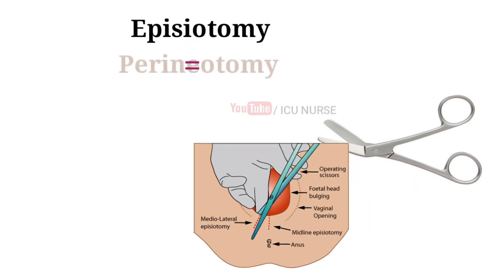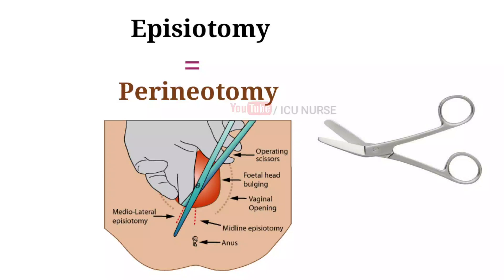Episiotomy is also known as perineotomy. It is a surgical incision of the perineum and the posterior vaginal wall, generally done by a midwife or obstetrician. Episiotomy is usually performed during the second stage of labour to quickly enlarge the opening for the baby to pass through. The incision may be done at a 90-degree angle from the vulva towards the anus, or at an angle from the posterior end of the vulva — mediolateral episiotomy — performed under local anesthetic, i.e., pudendal anesthesia, and is sutured after delivery.